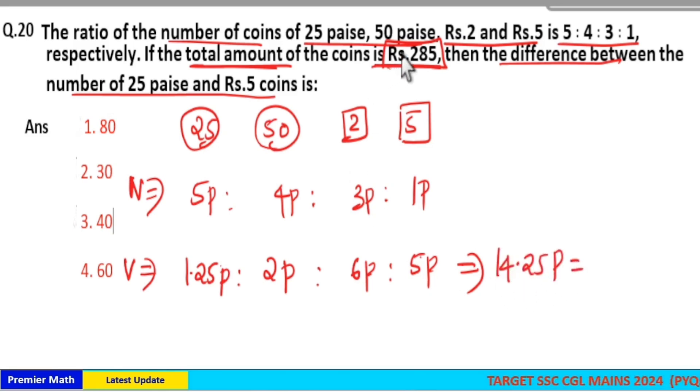But exact amount is rupees 285. Total value of these coins is 285, which is 14.25 part from this ratio. So 14.25 × 20 = 285. So 1 part is equal to 20.